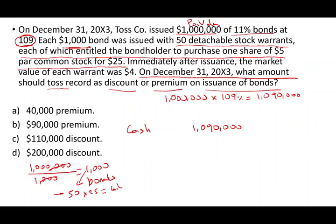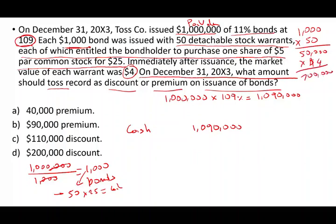Immediately after issuance, the market value for each warrant was $4. For each bond we have 50 warrants, and we have 1,000 bonds. So 1,000 bonds times 50 warrants per bond equals 50,000 warrants total. Each warrant is worth $4, so we have $200,000 worth of warrants.